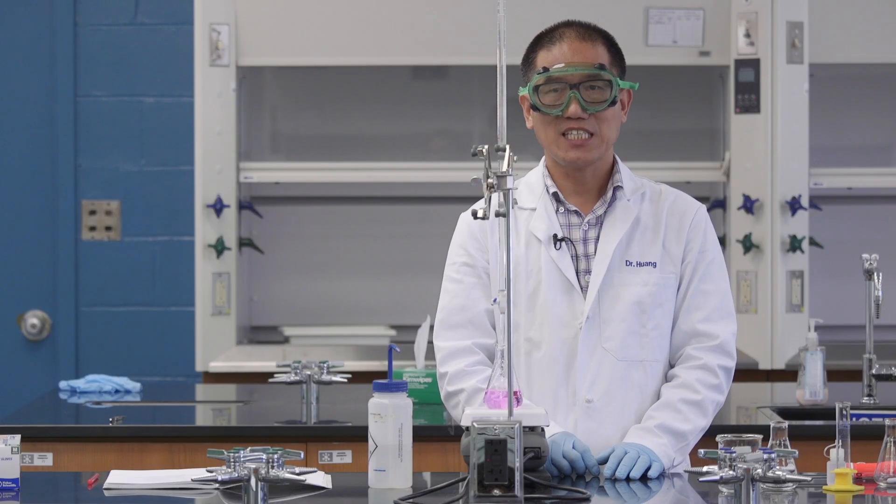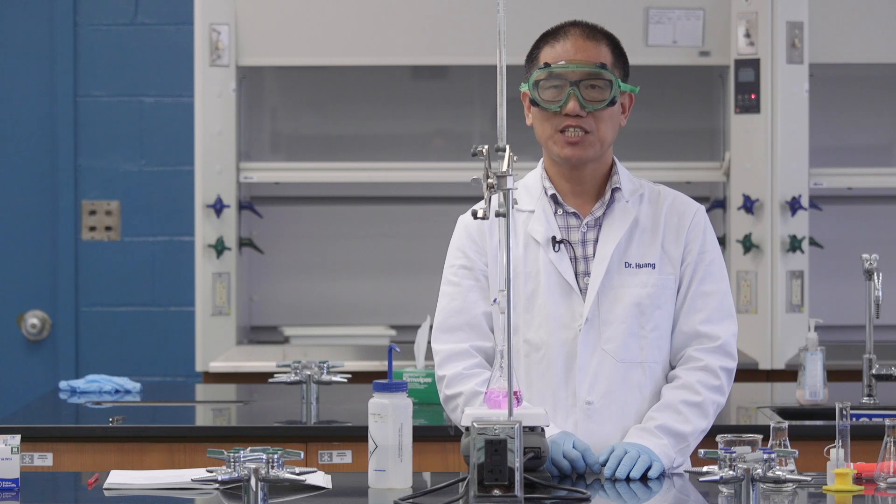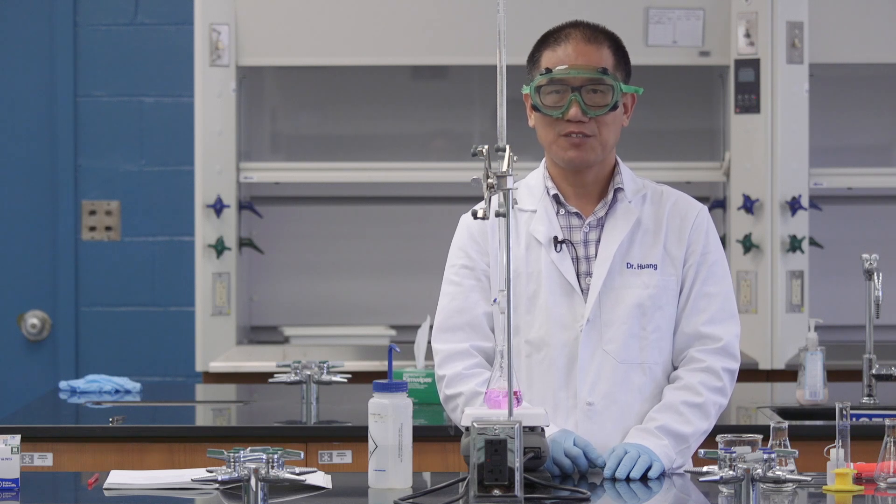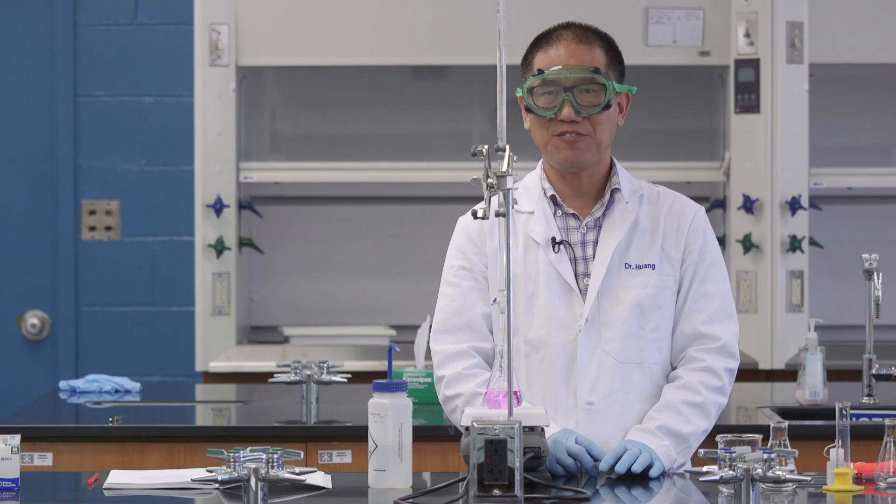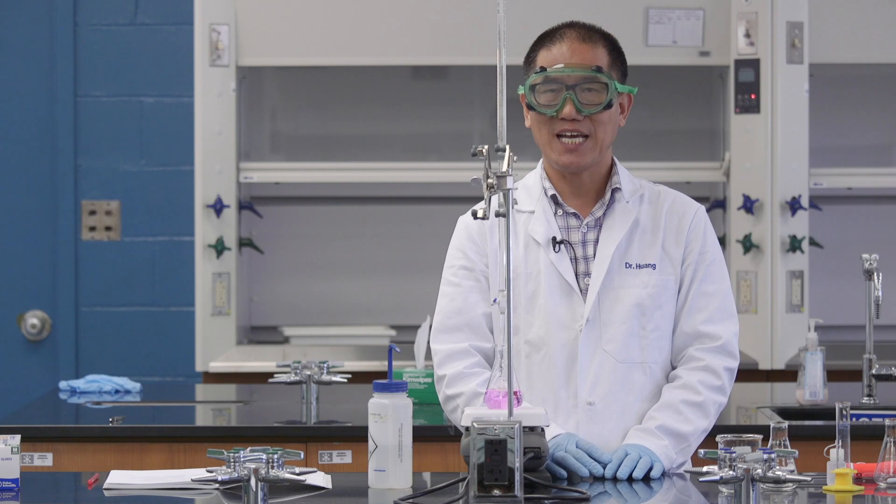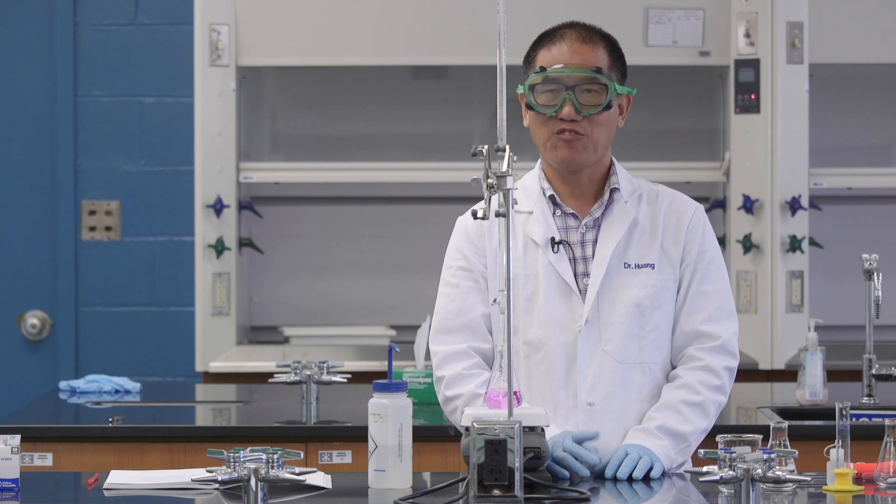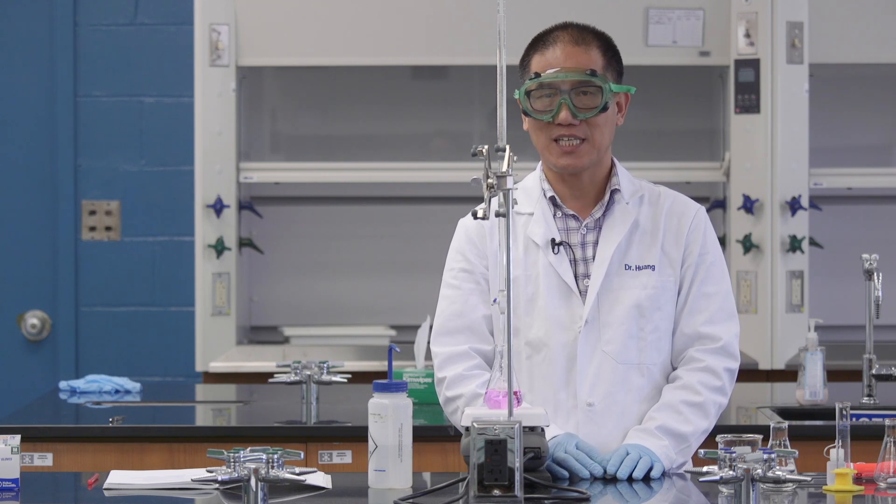For any experiment, including titration, you have to make sure your experimental results is repeatable. In other words, between two trials, the percentage of difference between the two should be less than 0.5% for a professional person to do this titration.